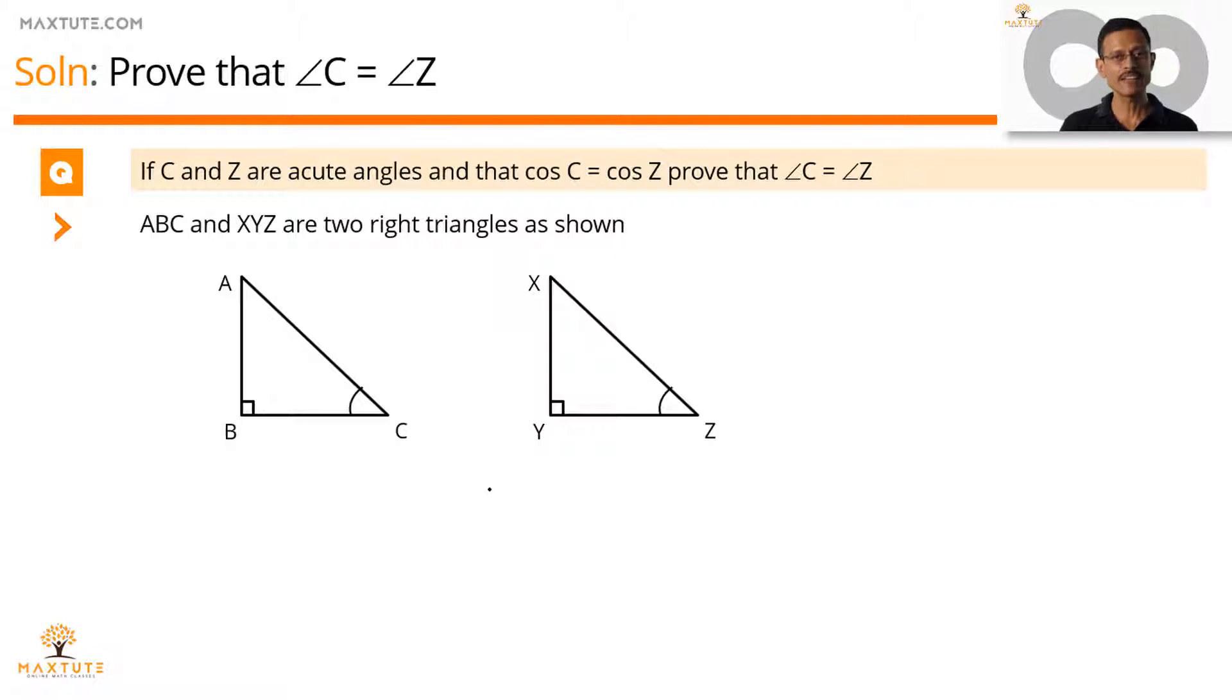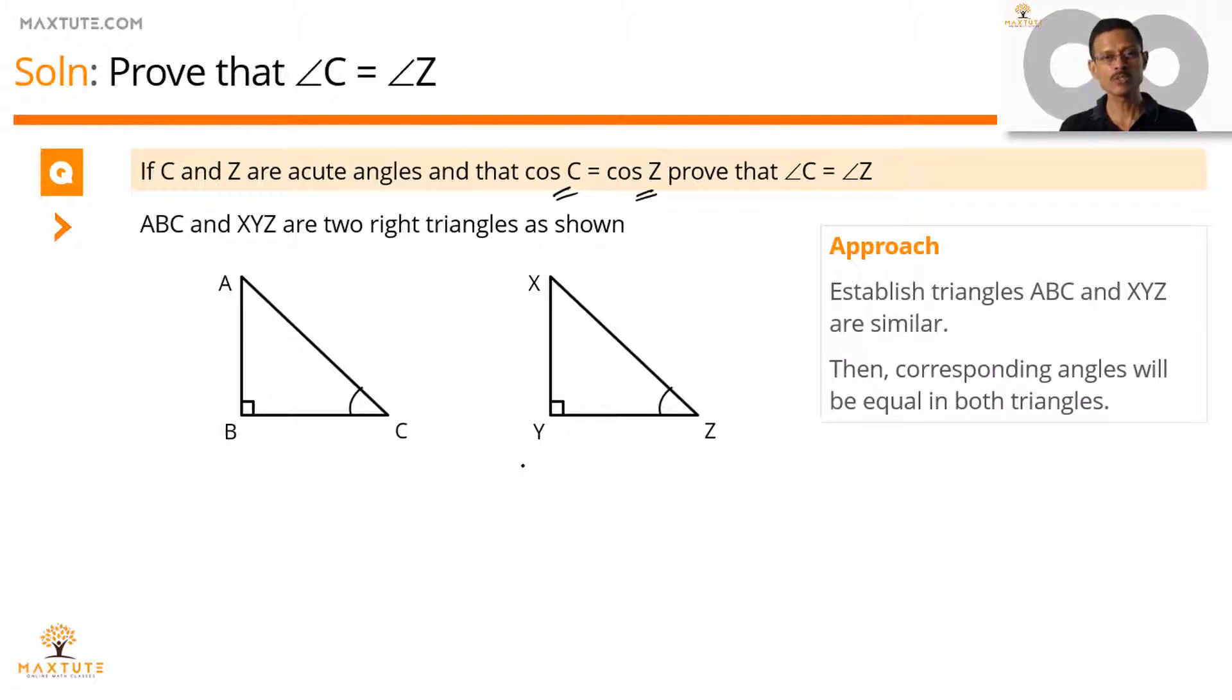What is the approach we are going to be taking? If cos C is equal to cos Z in these two right triangles, we'll try and establish that these two triangles ABC and XYZ are similar triangles. If we manage to do that using this information, then corresponding angles in both triangles will be equal. Therefore, we'll be able to say that these two angles are equal. So the approach is basically establish that these two triangles are similar and then establish that C and Z are corresponding angles and therefore they'll be equal.